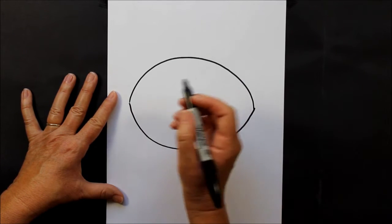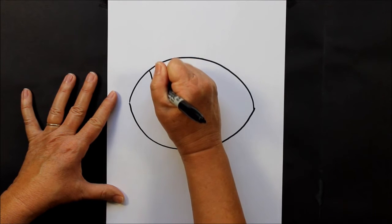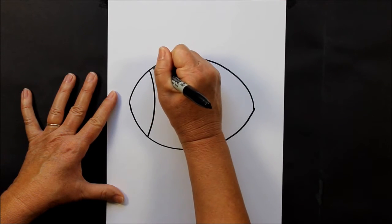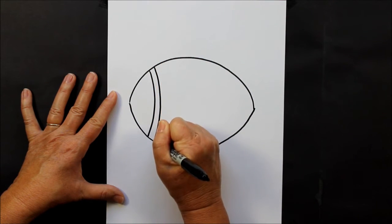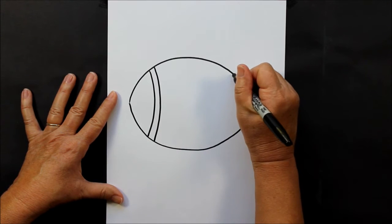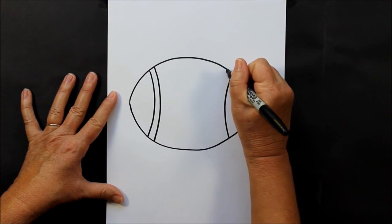Now in the football, we are going to make double lines like this, two more curved lines on this side, and then two more curved lines on this side.